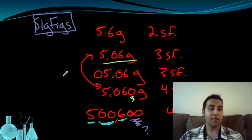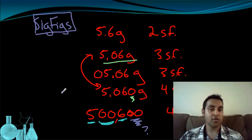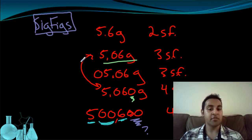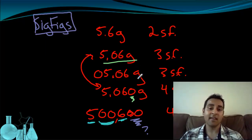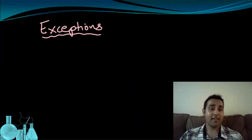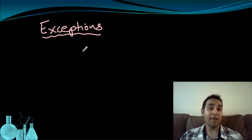Significant figures can be a little complicated. At the very end of this video, I'm going to show you a shortcut on how to quickly identify the number of significant figures. But you should really focus on trying to build an understanding of where significant figures come from and what they have to do with uncertainty, because that connection between the concepts is important.